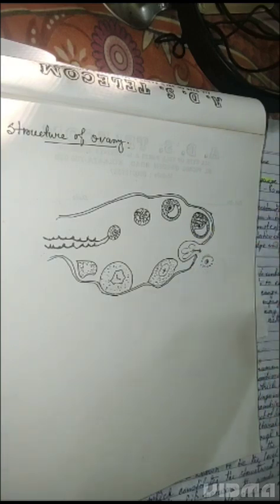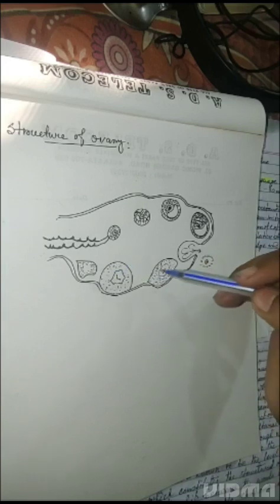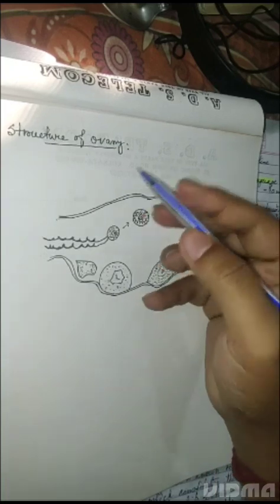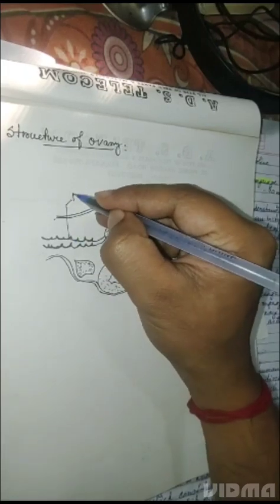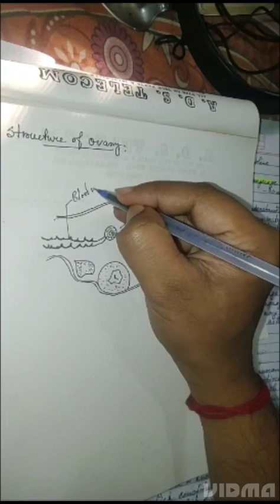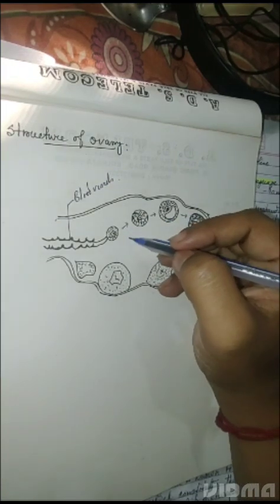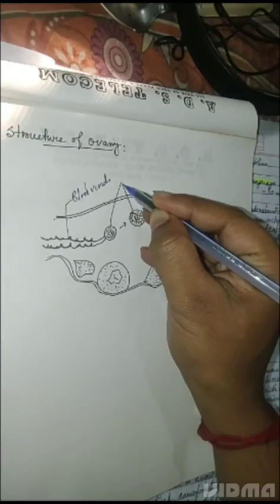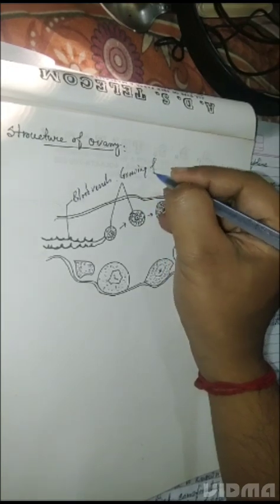In the next part, we are going to describe the structure of the ovary — how an ovum forms and develops inside the ovary. This is the basic structure of the ovary, and these are the developing stages. First of all, starting from the beginning, these are blood vessels connected to the ovary. The initial stage is called growing follicles.